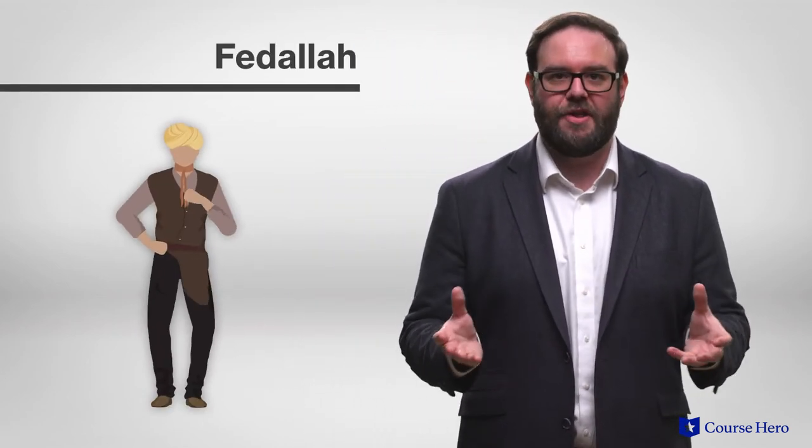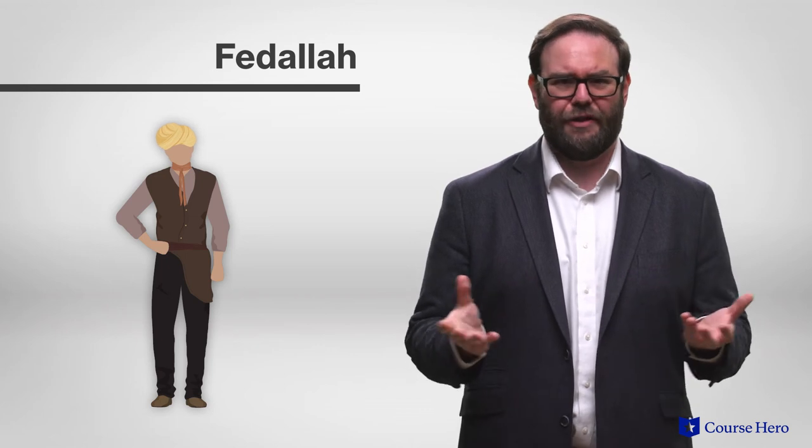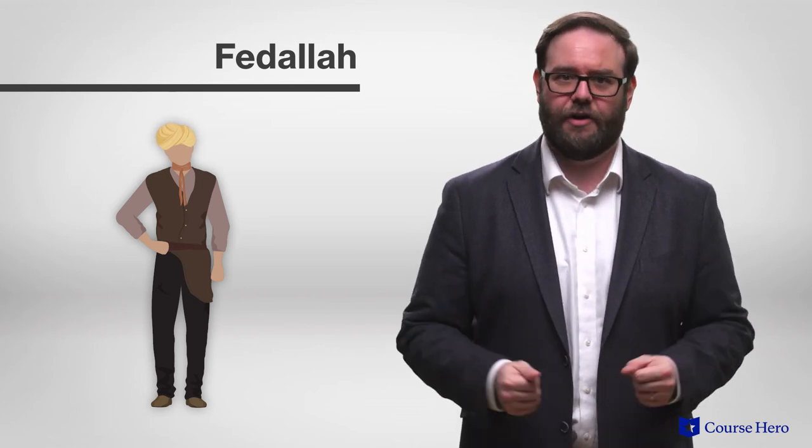If Bildad and Peleg do not have authority over Ahab, then who does? Ishmael implies that Fadala, who is accompanied by his subordinate phantoms, may have influence or even authority over Ahab. It's all very mysterious.